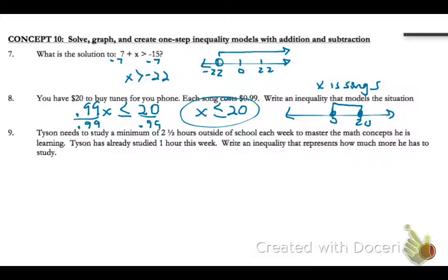Number nine: Tyson needs to study a minimum of two and a half hours outside of school each week to master the math concepts that he's learning. Tyson has already studied one hour this week. Write an inequality that represents how much more time he has to study.